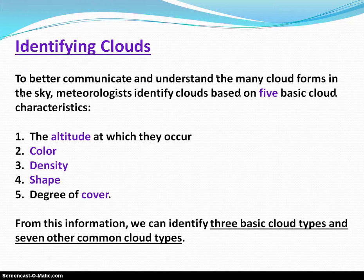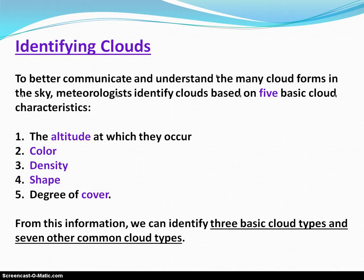When we look at clouds, to understand what these clouds mean, where they're located, and what they're going to predict, we look at five basic characteristics. We determine the altitude the clouds are found in, how high up in the troposphere they'll be found, the color they'll have — lighter or darker, possibly a greenish hue that might predict hail or supercells — the density of those clouds, what shape they are, and how much cover they provide in the sky.